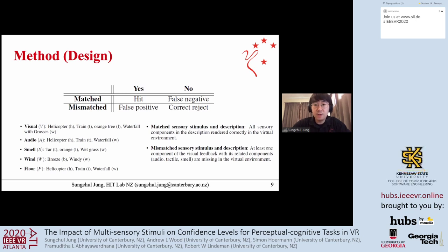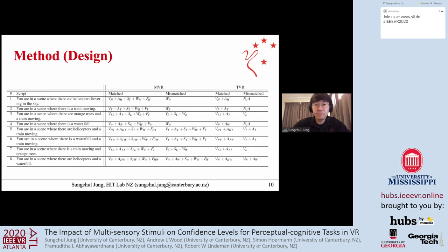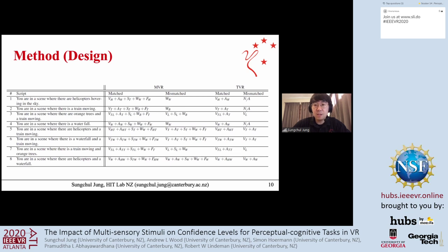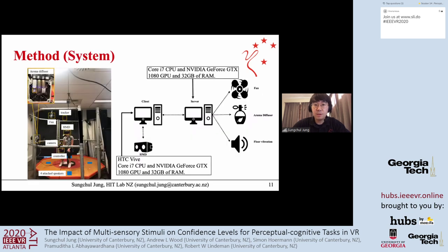Participants then reported their confidence levels using a vertical gaze bar with a Vive controller. We adopted signal detection theory with a two-alternative forced choice—participants chose if the place matched the description under sensor-matched or mismatched conditions in either MVR or TVR. We differentiated sensory component combinations: for visual components we prepared a helicopter, train, orange tree, and waterfall with glasses. For example, script number 2 described a scene with a moving train, providing train audio, car smell, wind blowing, and rumbling vibration in the matched MVR condition, while missing some feedbacks in the mismatched condition.